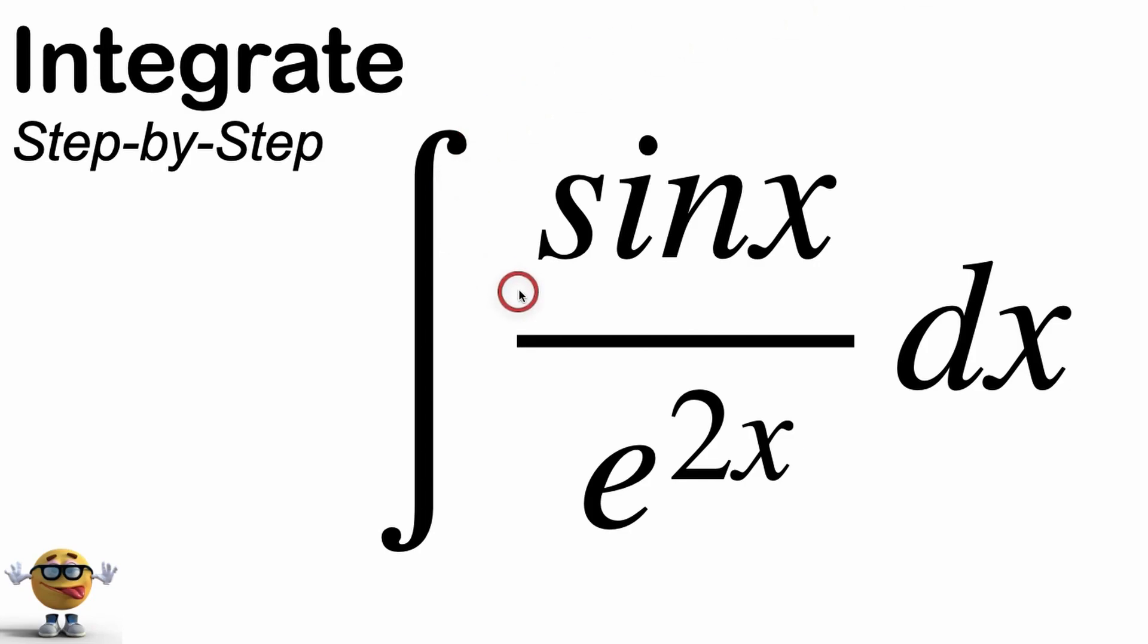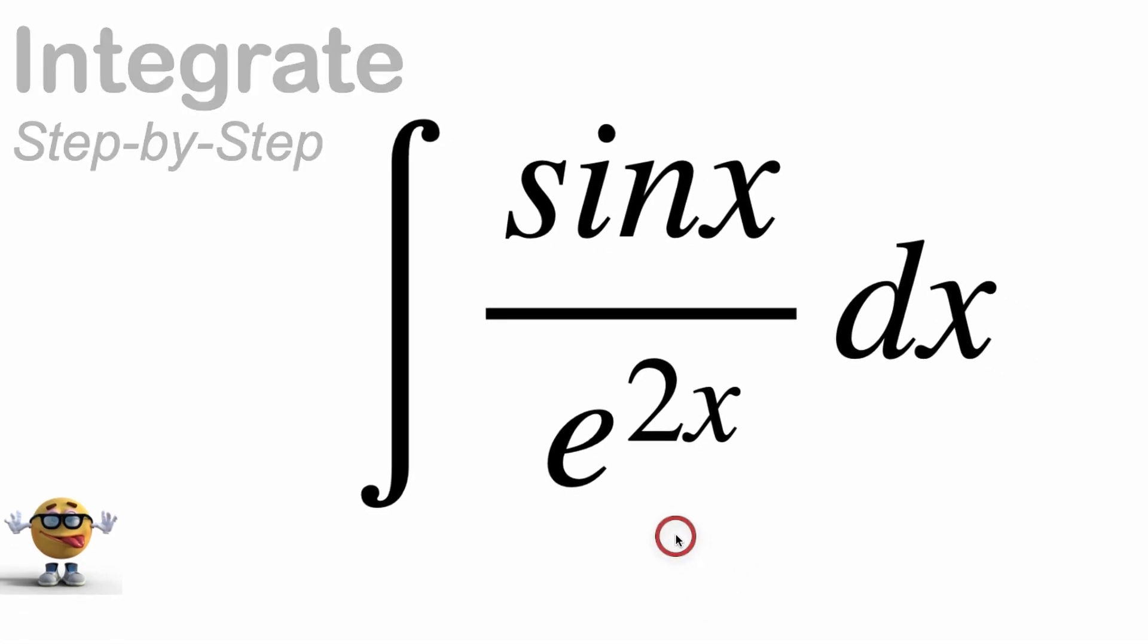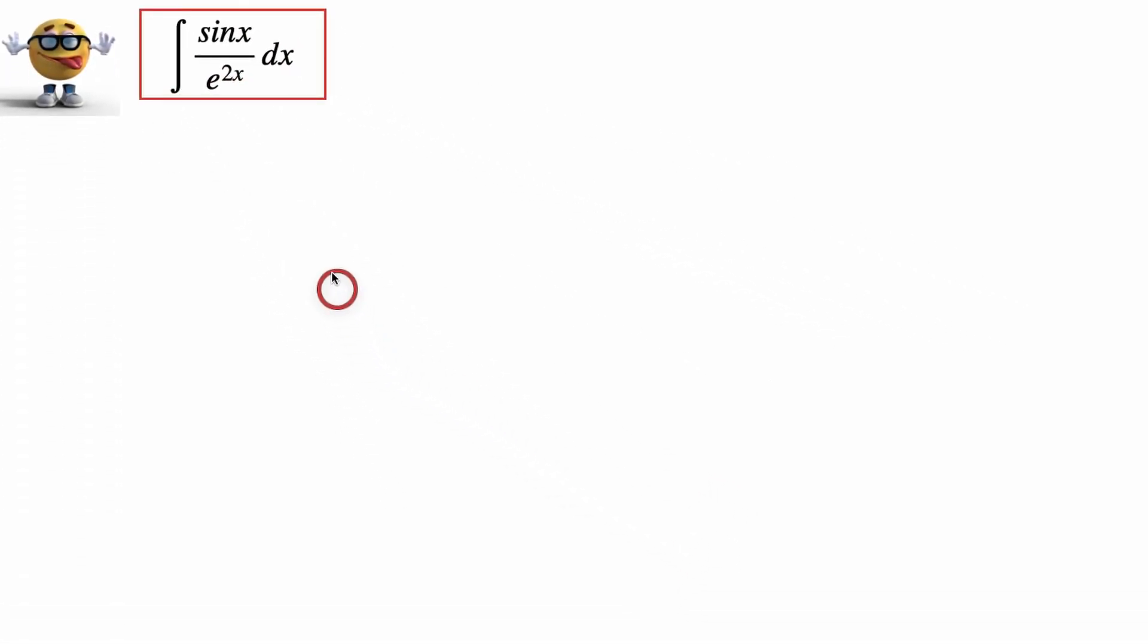Alrighty gang, we're going to evaluate the integral of sin x divided by e to the 2x, and this is a sneaky integral because there's a trick that you might not be expecting. Now we're going to solve this using integration by parts, which is the most popular method. But there is a different way to do this that I prefer, but watch this way, see what you think, and then watch the way that I prefer to do it, and you can decide which method you like better.